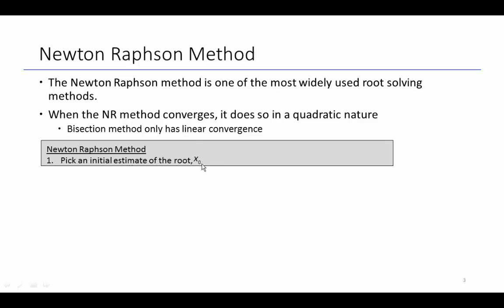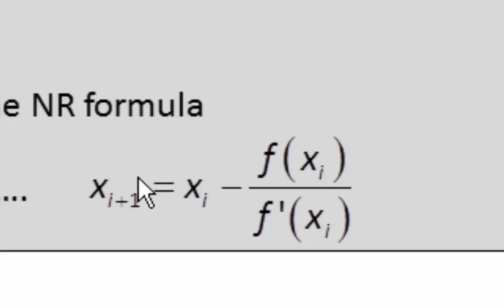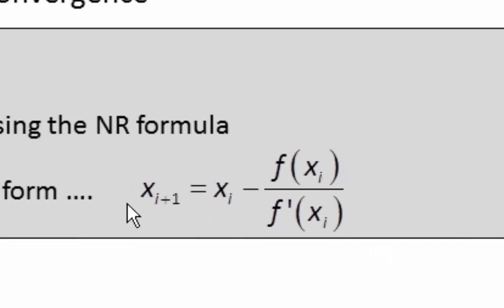Step two is to update your approximation using the Newton-Raphson formula. Your next approximation, x subscript i plus 1, equals x at iteration i minus the function at x at iteration i over the derivative of the function at iteration i. We use knowledge of the function and the derivative in our previous guess to get an update of our new guess.